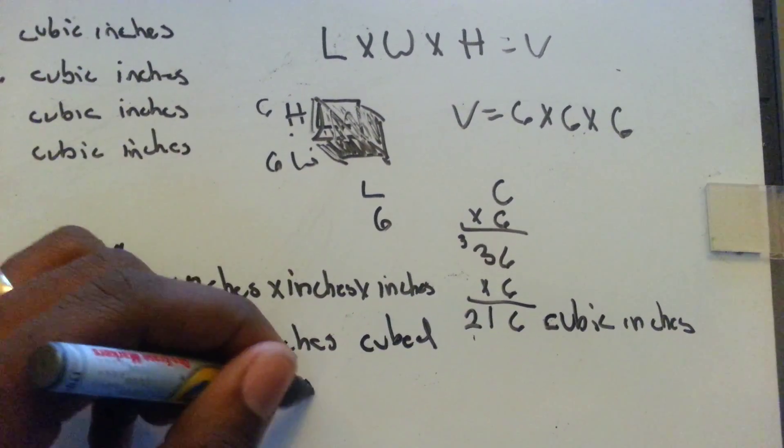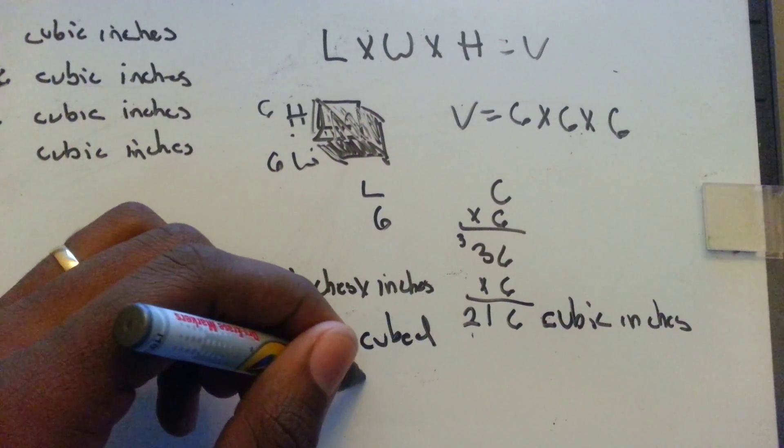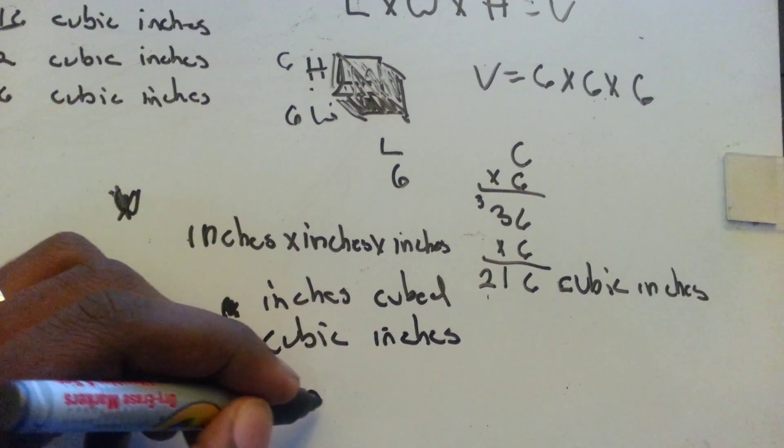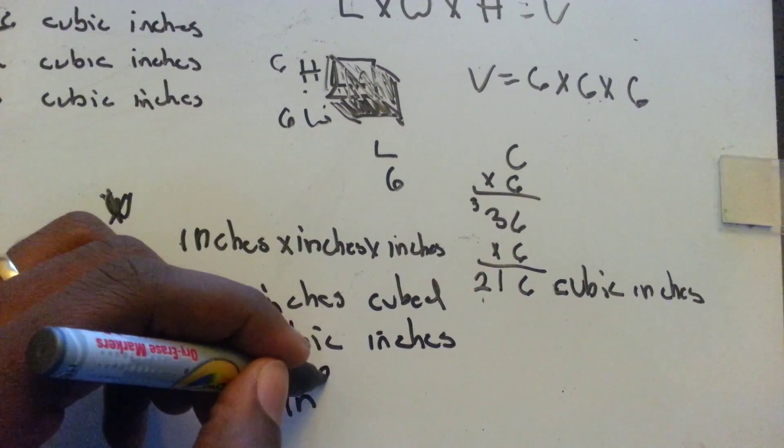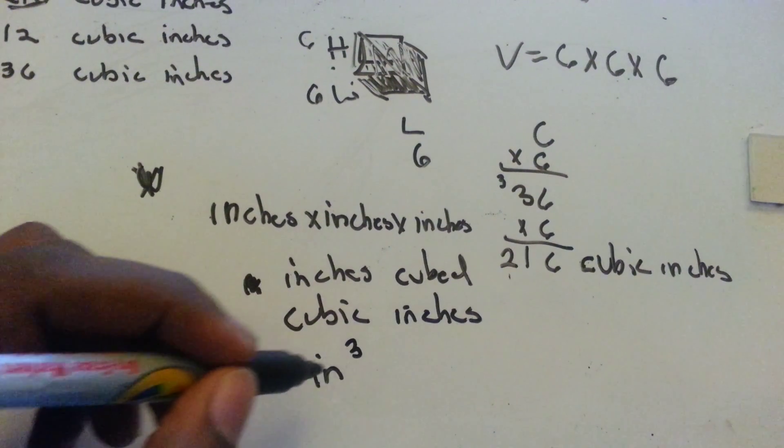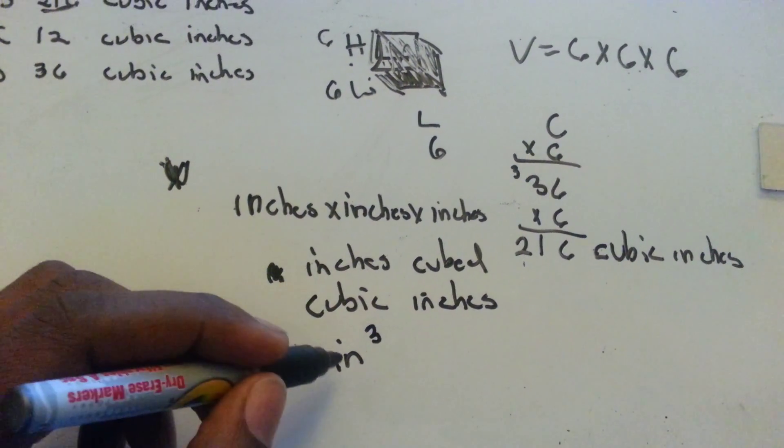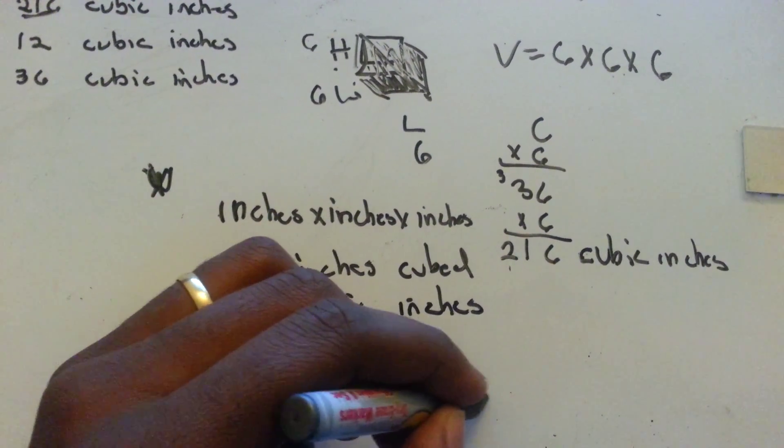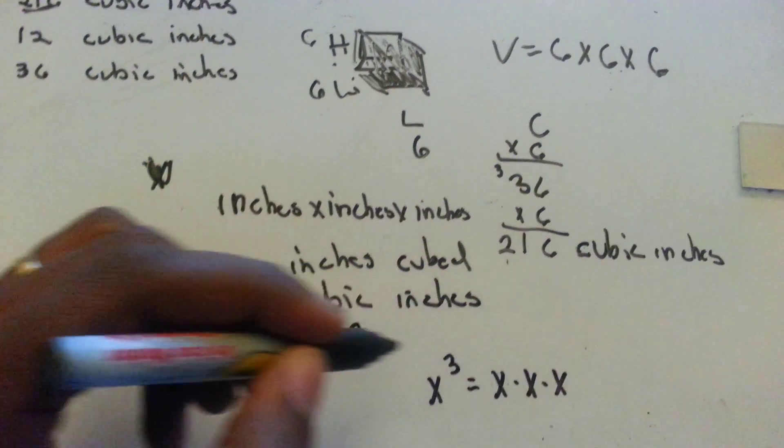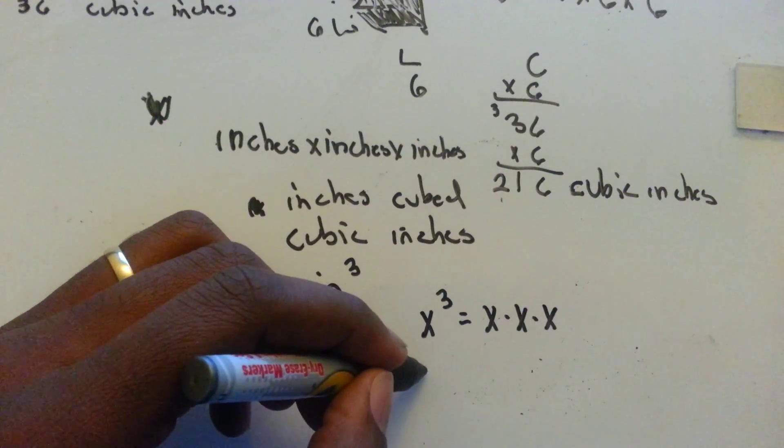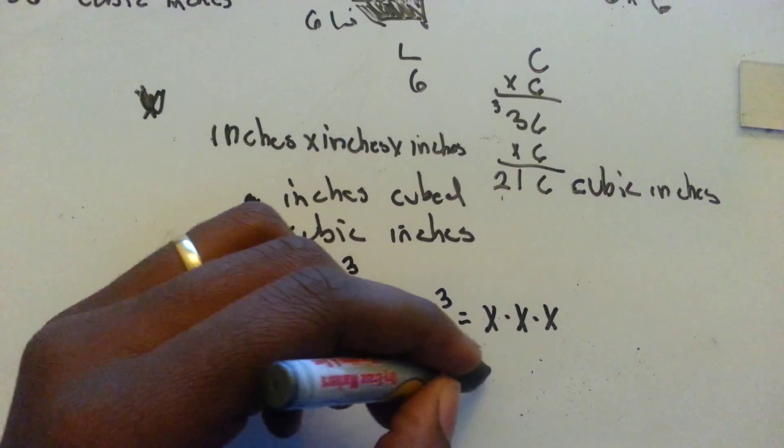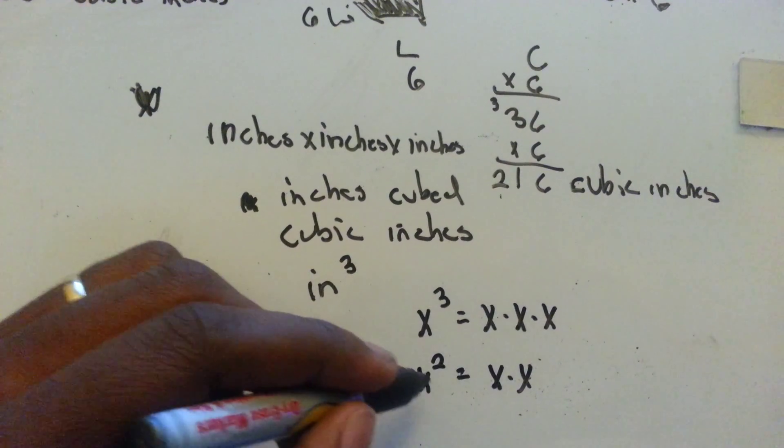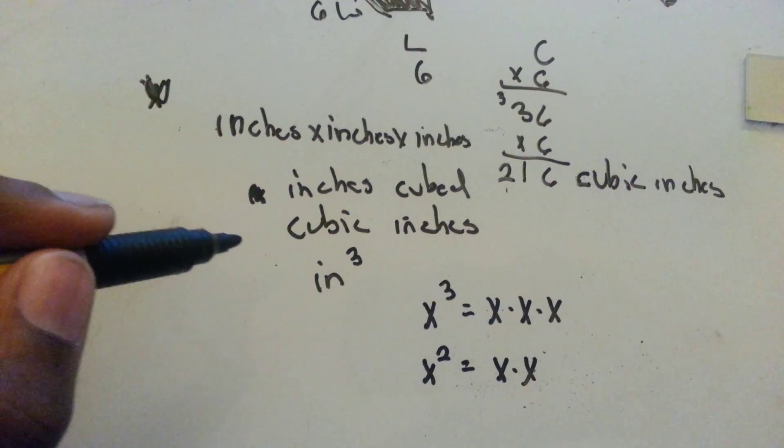Or cubic inches, you can switch them around it still means the same thing, which also may be written out as inches cubed. So that doesn't throw you off, the three above something means that it's cubed, that means whatever it is times three. You have x cubed that means x times x times x. Just another little pointer, if you have x squared that basically means x times x. Okay so whatever it is you're multiplying it by itself and that's what the little two up top means.